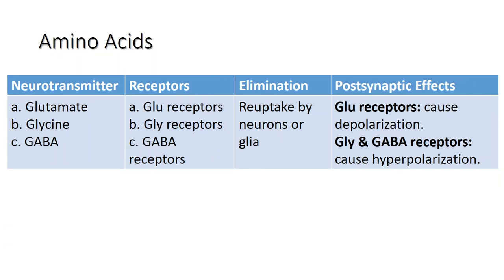The amino acid neurotransmitters include glutamate, gamma-aminobutyric acid, and glycine. Each amino acid neurotransmitter is part of its own system: namely the glutamatergic, GABAergic, and glycinergic systems. They have their own receptors and do not interact with each other.